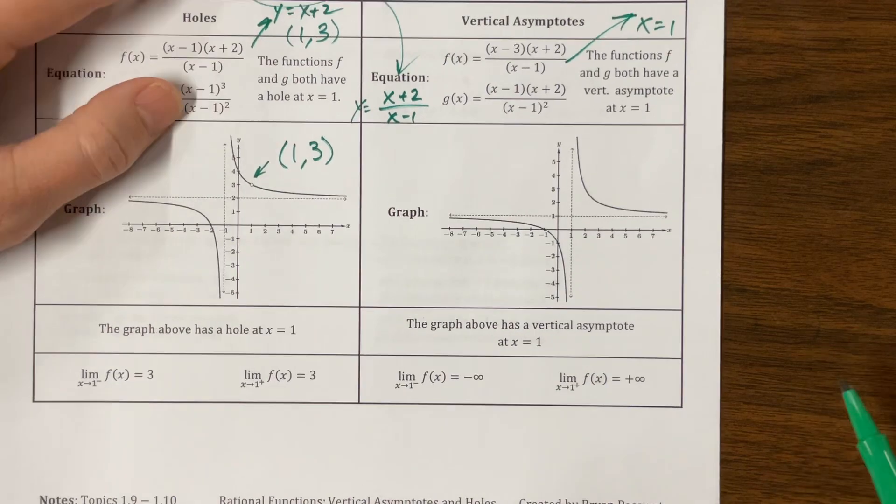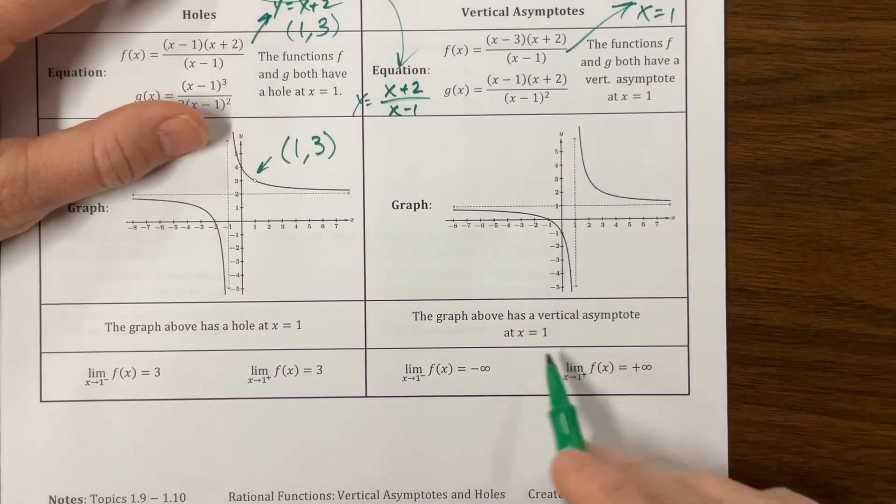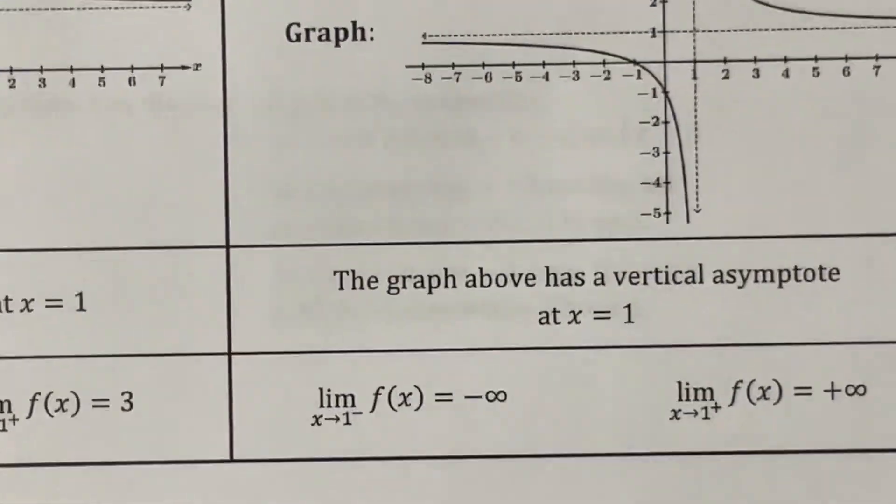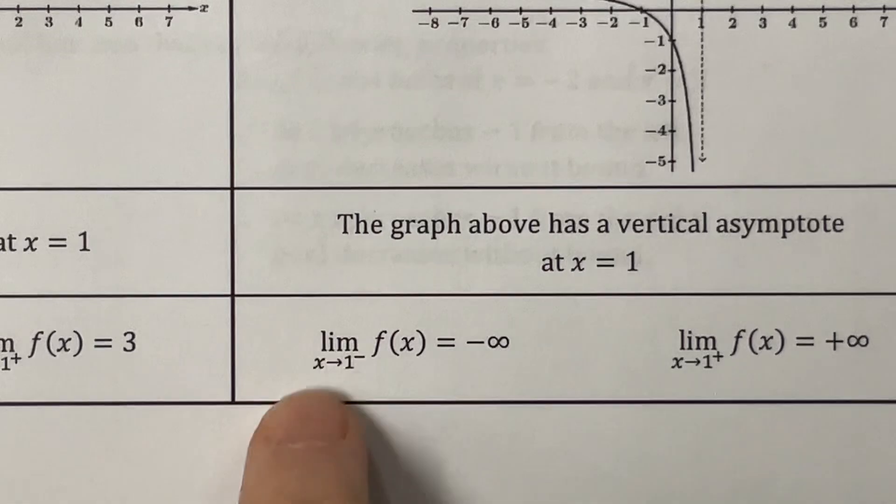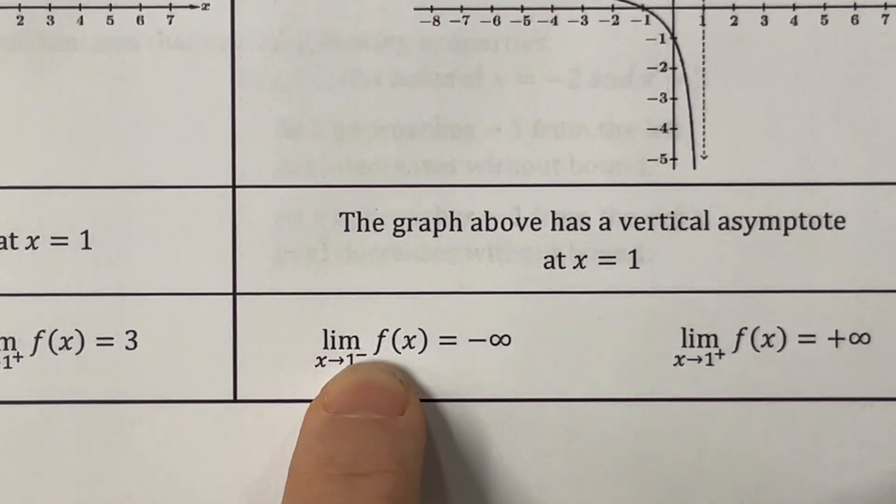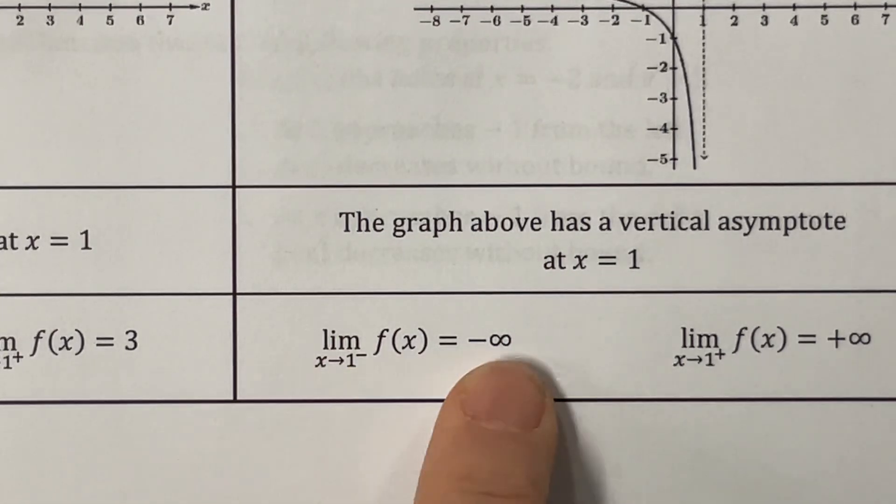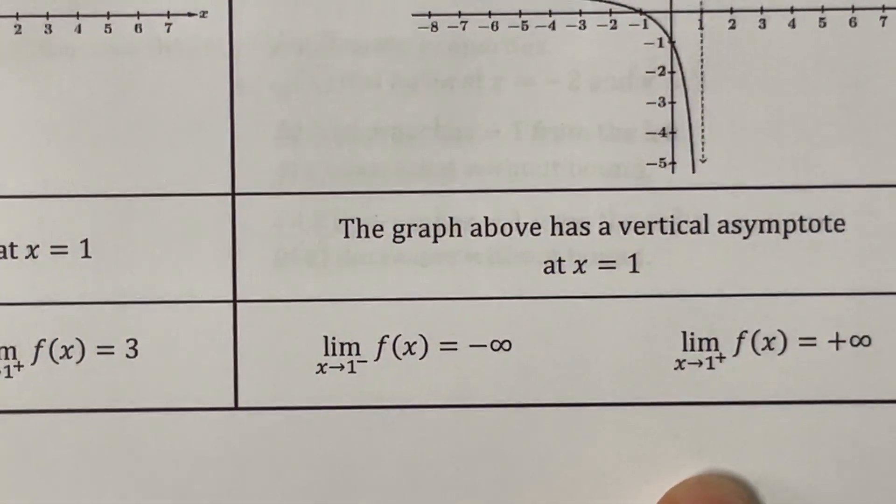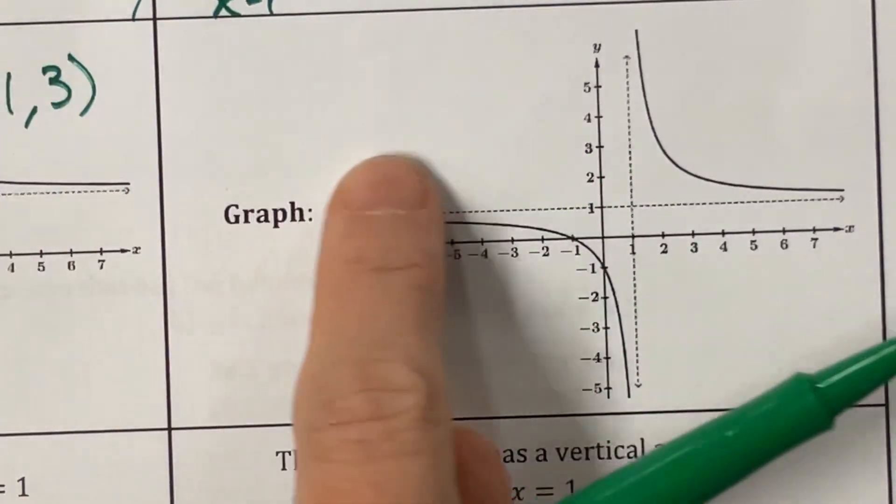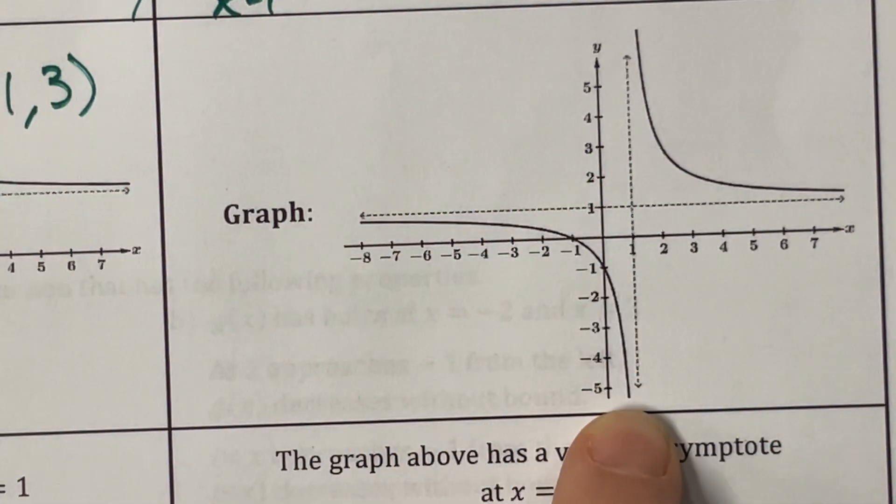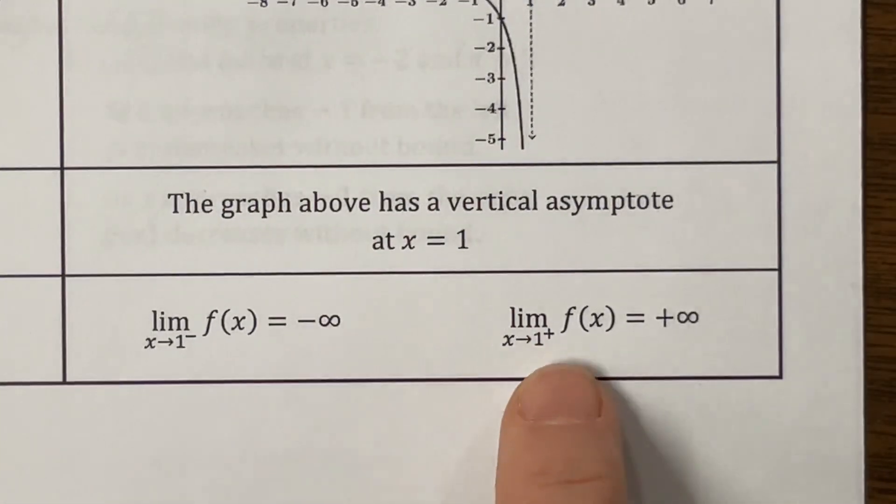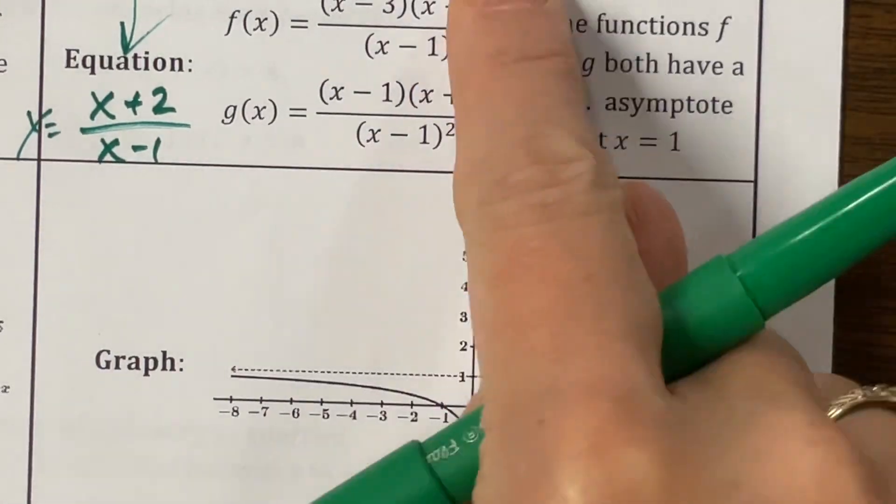So on this one, we've got this asymptote and we will approach the asymptote from the left and the right. So can you see how this notation looks? It's saying the limit as x approaches 1 from, that negative tells us from the left of f(x) equals, well, as I approach from the left, what am I doing? I'm going to negative infinity. Could you see my graph? As I approach from the left, as I get closer and closer from the left-hand side, I'm going to negative infinity. On this one, what happens as I approach from the right, I go to positive infinity.